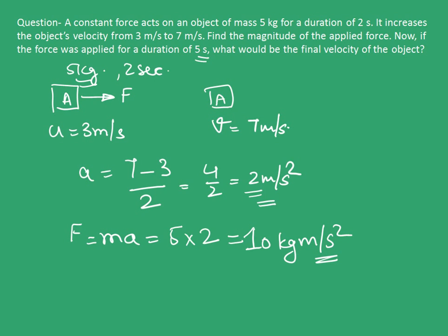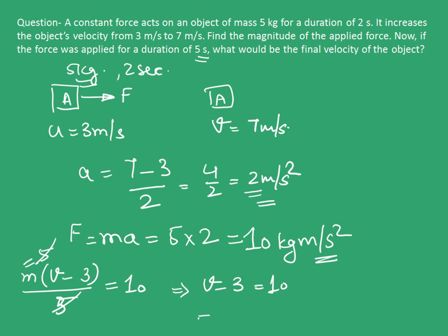Having found out the force, we have been asked to calculate the velocity if this force was applied for 5 seconds instead of 2 seconds. So, from second law, we know that mass into let's say the final velocity becomes V minus the initial velocity 3 upon the time taken that is 5 seconds equals to the force applied equals to 10.